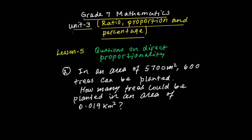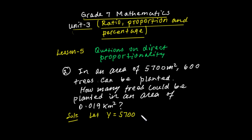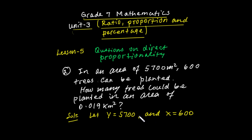Here we have square kilometers. Let y represent 5,700 square meters, and x is equal to 600 trees. The relation between these two is direct proportionality — that means as the area of the land increases, the number of trees that can be planted also increases. So y is equal to k times x.